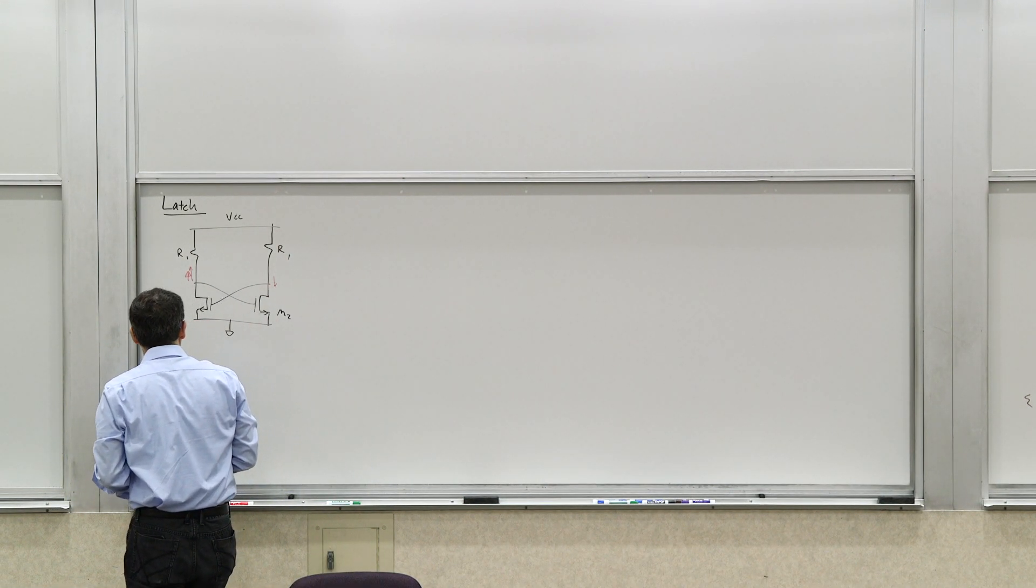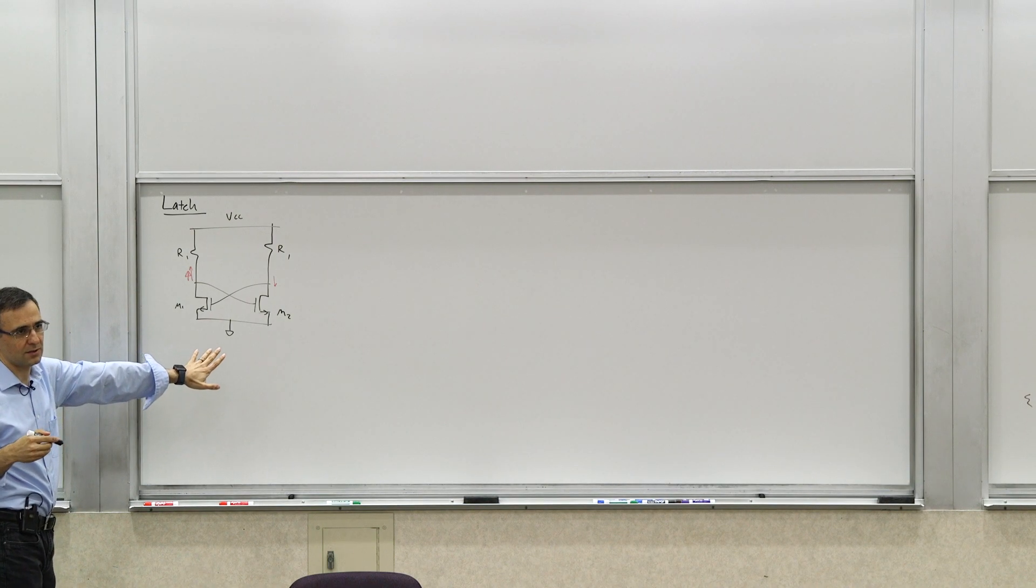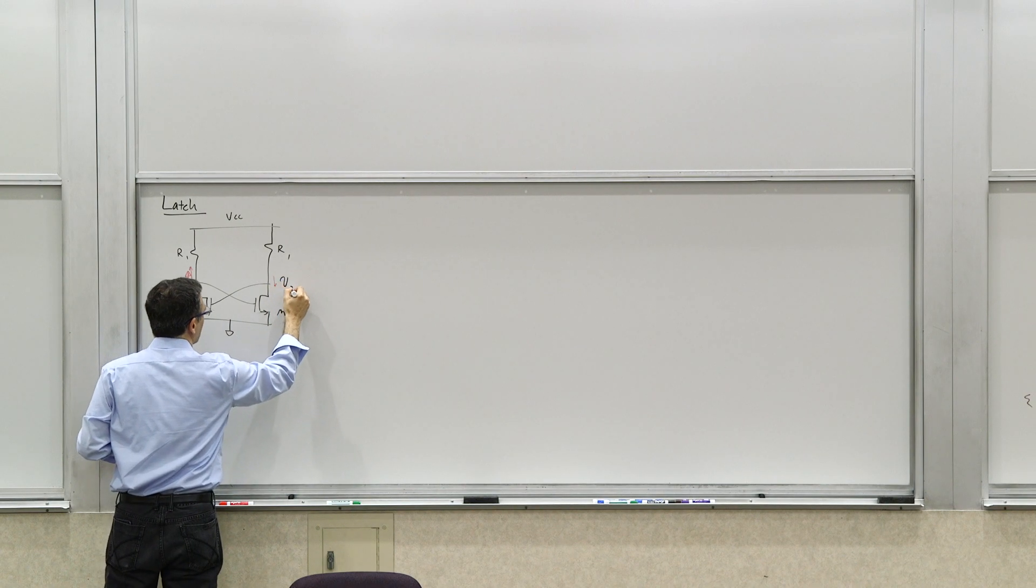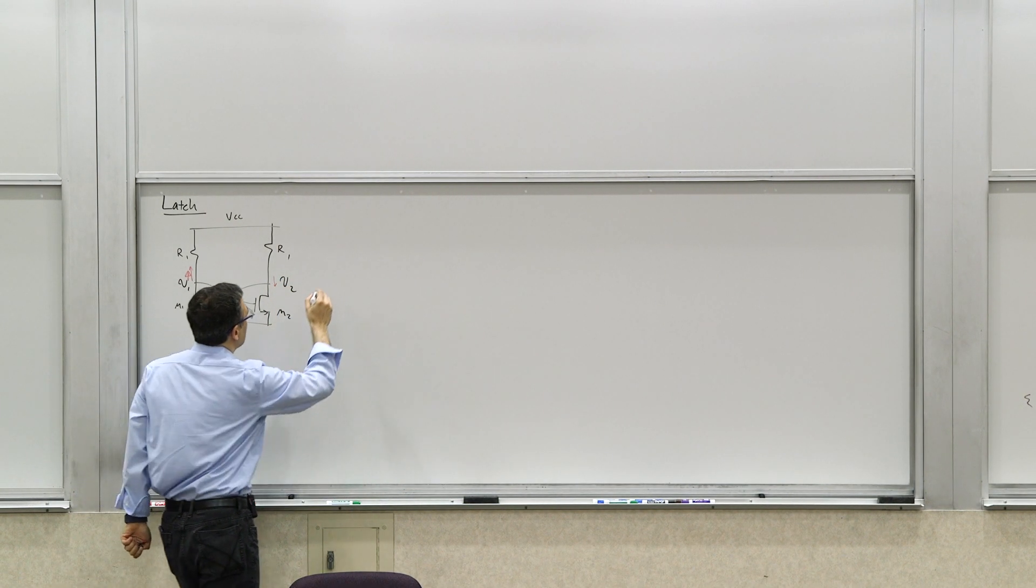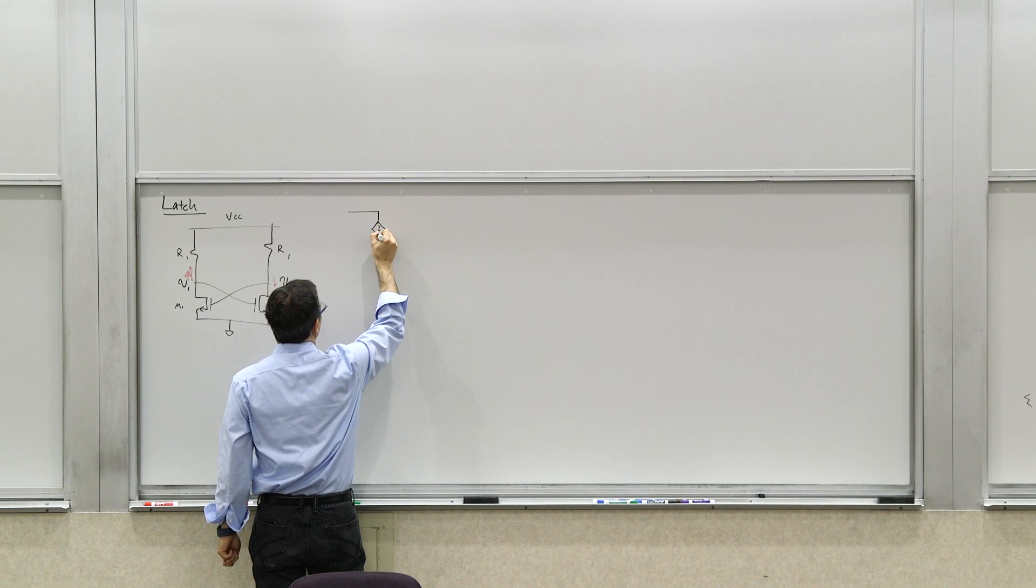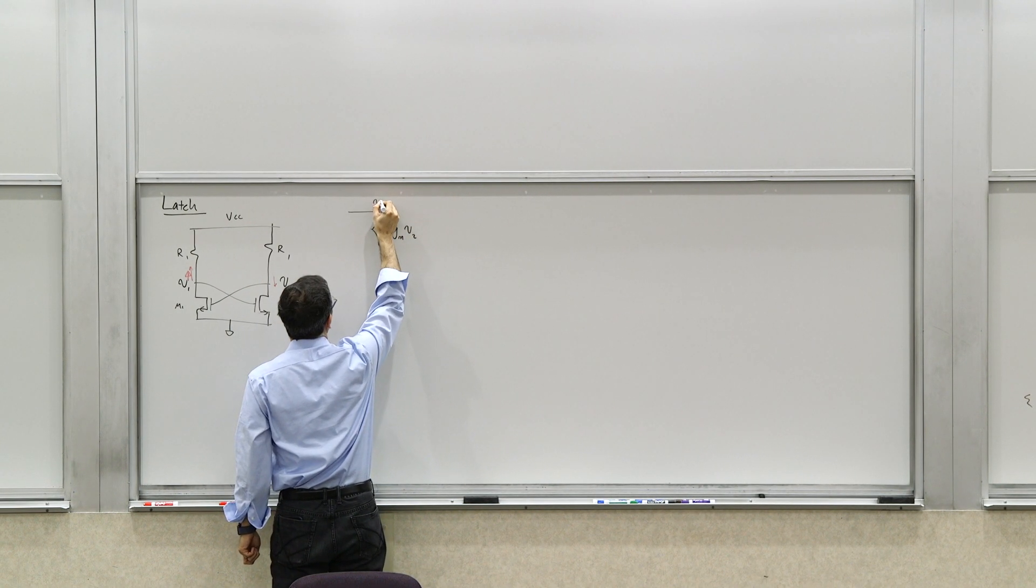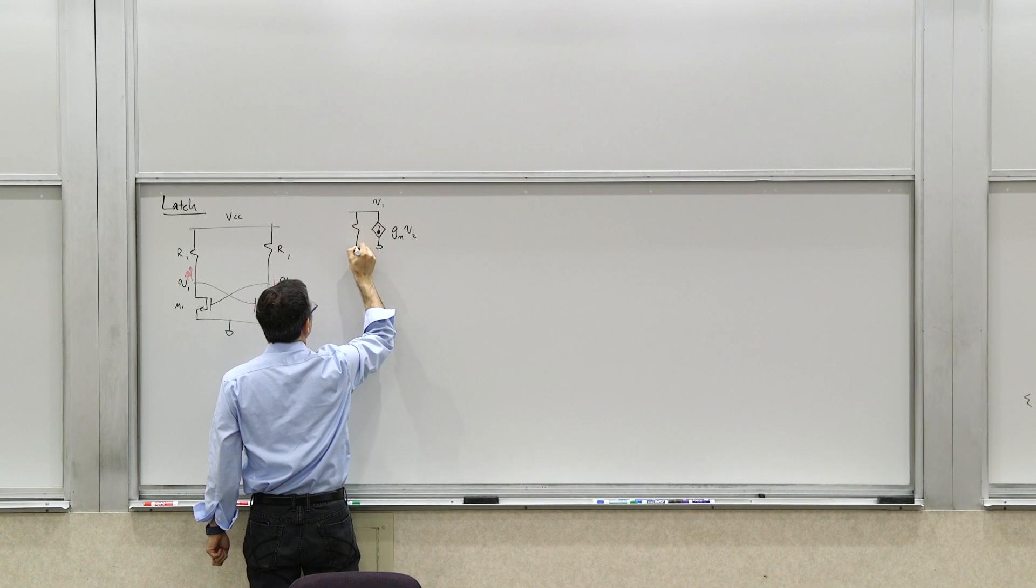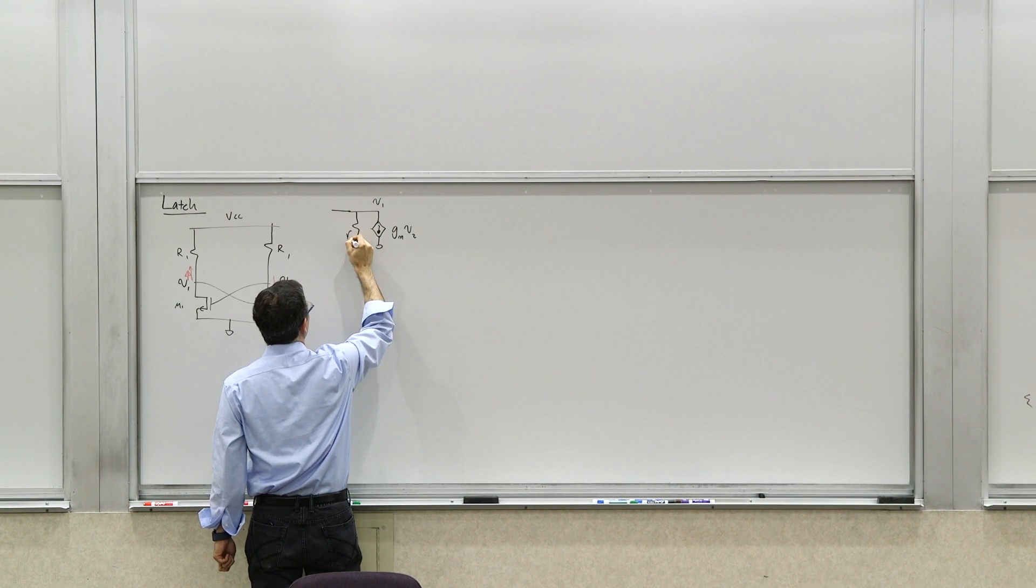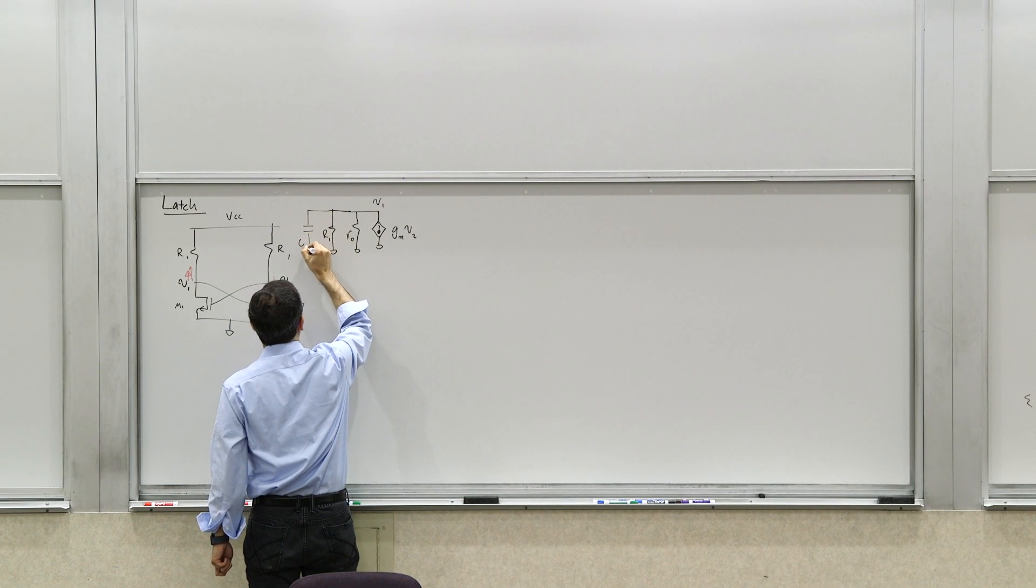Now quantitatively, we can actually think about this many different ways. We can write time constants, et cetera. But let's write differential equations for this. Let's call this voltage V1 and V2. And if you look at these as V1 and V2, then you can draw the small signal model for this. On the left hand side, we'll use the pi model on both sides. So you have a GMV2. This is V1. You have R1. You have the RO of the transistor. And then you have R1. And then you have some capacitance, let's say CL.